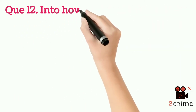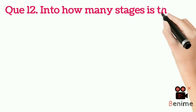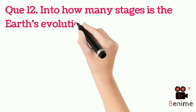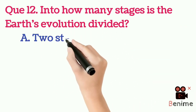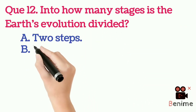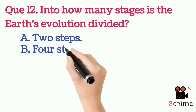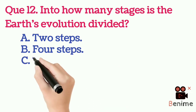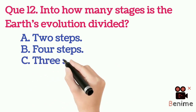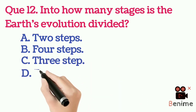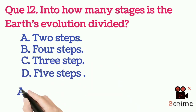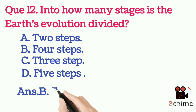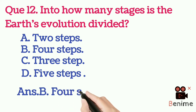Question 12: Into how many stages is the Earth's evolution divided? A. Two steps. B. Four steps. C. Three steps. D. Five steps. Answer B: Four steps.